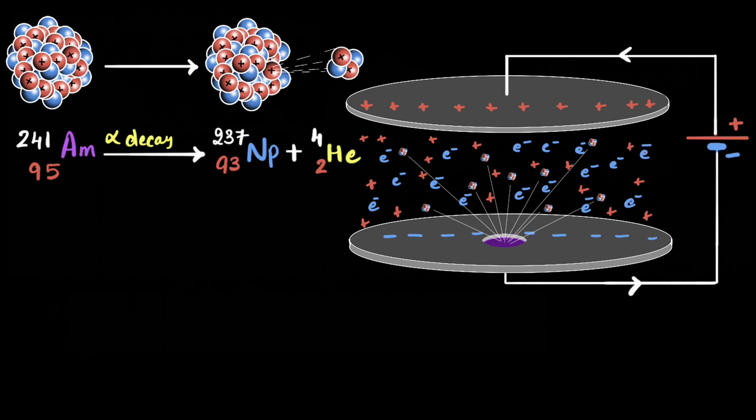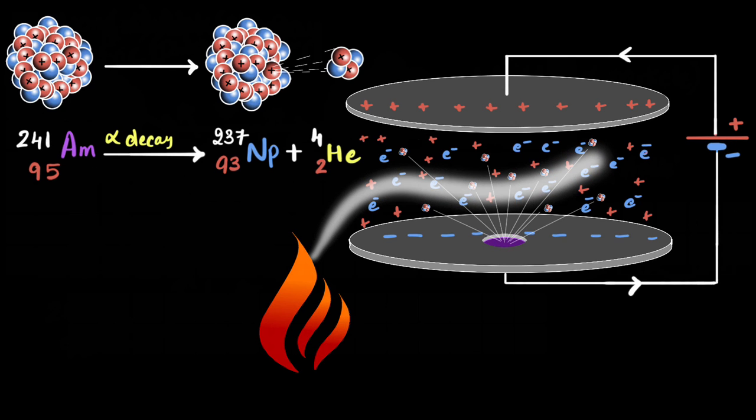But anyways, what happens when we have smoke? Well, it disrupts this process. It doesn't allow the helium to ionize a lot of these atoms anymore because of the smoke particles in between. That significantly reduces the current and that is sensed by a sensor in the circuit and the alarm goes off. This is how alpha decay can be used to detect smoke. I find this absolutely mind-boggling.